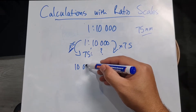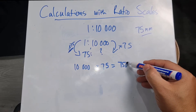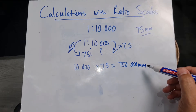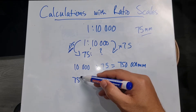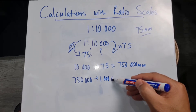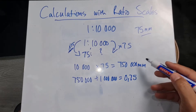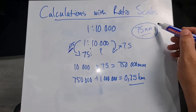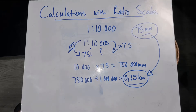So what am I going to sit with? 10,000 multiplied by 75 is going to give me 750,000 millimeters. Then I want to convert from millimeters to kilometers, so I'm going to take my 750,000 millimeters and divide that by 1,000,000, and that gives me an answer of 0.75 kilometers. So 75 millimeters on the map is equivalent to 0.75 kilometers in reality.